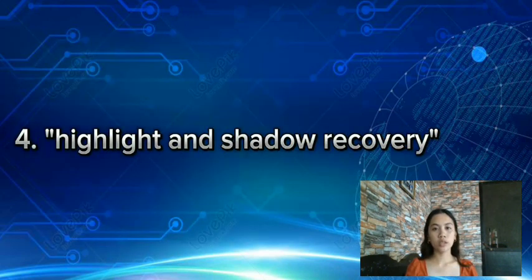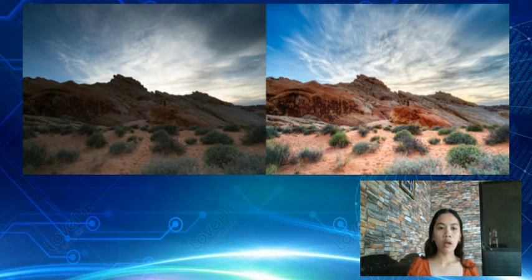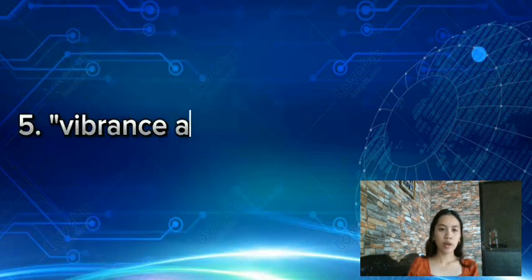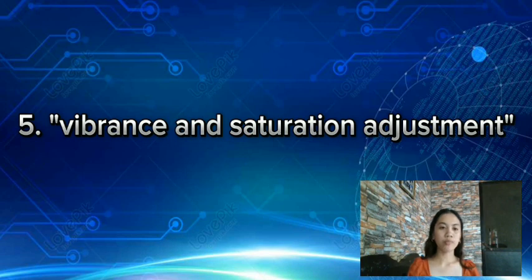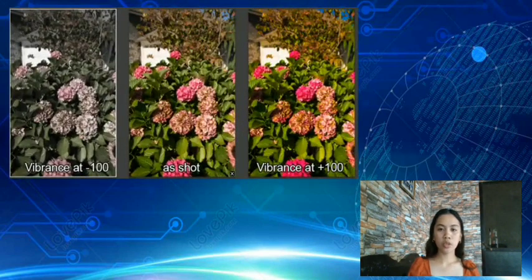Next: highlight and shadow recovery. Lower the highlight slider to darken the brightest sections of the image and recover lost detail, or increase it to make your brightest areas even lighter. Often the sky will be brighter than you want and the shadows darker than you want, so photos straight off the camera don't look the way your eyes perceived the scene — that's where highlight and shadow recovery becomes critical. Next: vibrance and saturation adjustment. If the image is very colorful but only needs small enhancements, the vibrance tool should be used. If the colors in the image are muted, the saturation tool should help bring them to light.